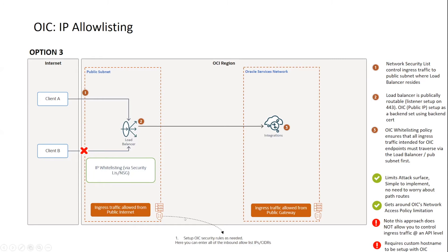From an IP allow-listing point of view, that is all done at the security list or the network security group level, where you can define as many rules as you want. The OIC network allow list is just ensuring traffic traverses the load balancer. However, you cannot route at a specific API level based on an IP address — it's applicable to the whole instance. You also don't get the benefits of a gateway, such as rate limiting, but you gain less maintenance around exposing APIs publicly.